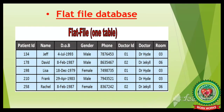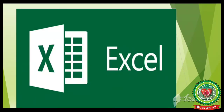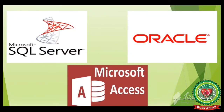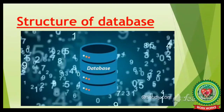An example of a flat file database is Microsoft Excel. A relational database stores data in several tables. As you can see in this picture, data is stored in two tables and those tables are linked together to get a common piece of information as a third result. A relational database creates a relation between two or more tables. Examples include Microsoft SQL Server, Oracle, and Microsoft Access.